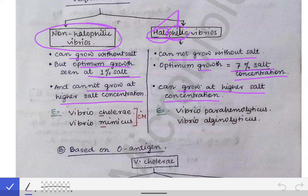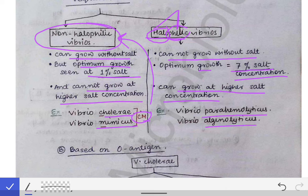To remember the non-halophilic vibrios, use the mnemonic 'CM' — like a chief minister who has high blood pressure and should restrict salt intake. C stands for Vibrio cholerae and M for Vibrio mimicus. For halophilic vibrios, there are two examples: Vibrio parahaemolyticus and Vibrio alginolyticus.